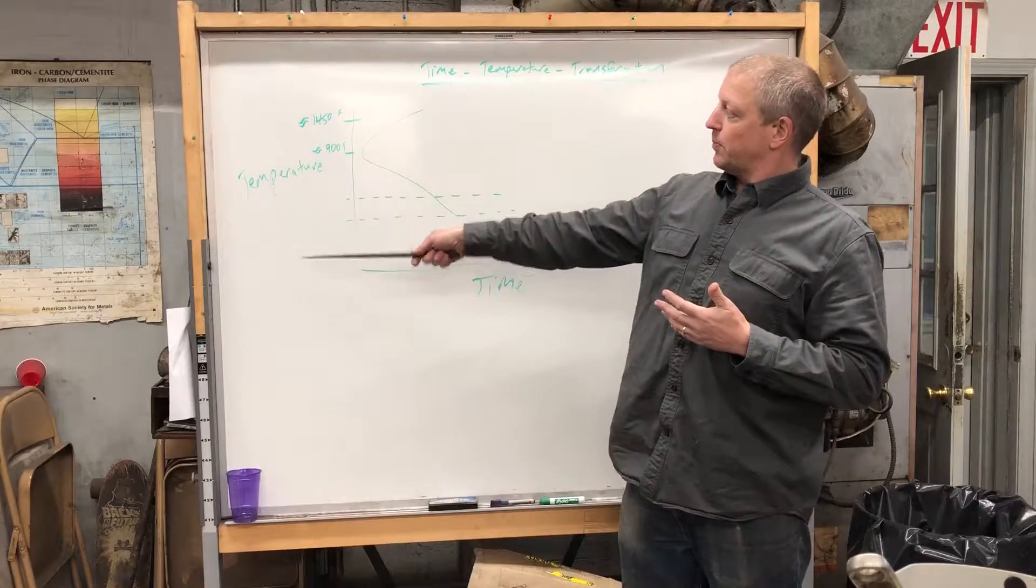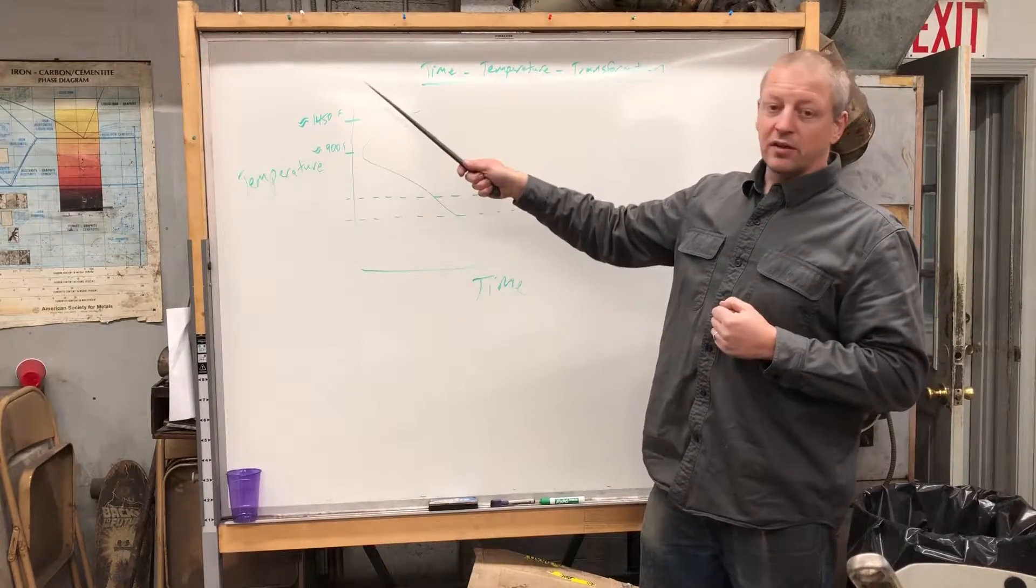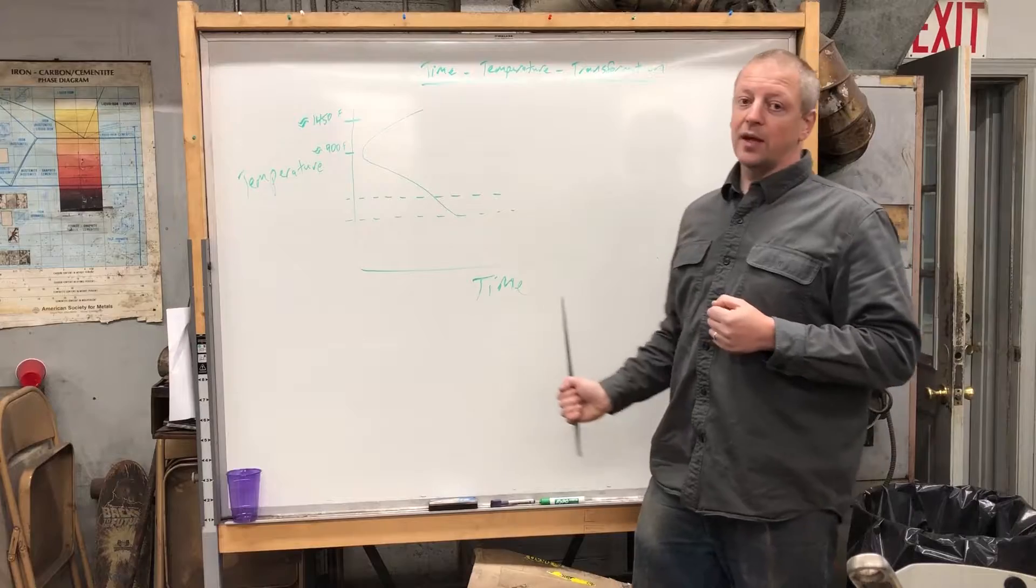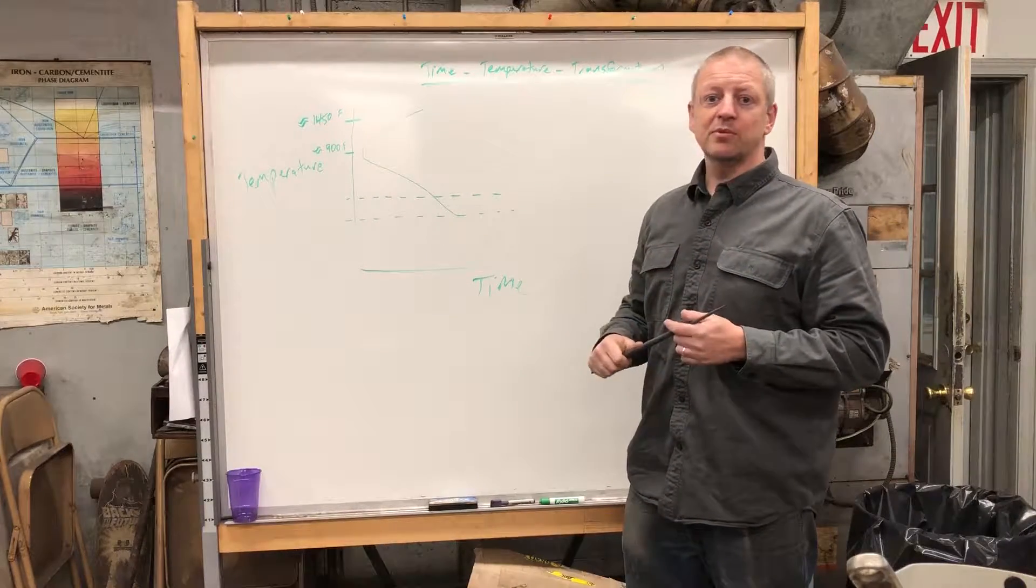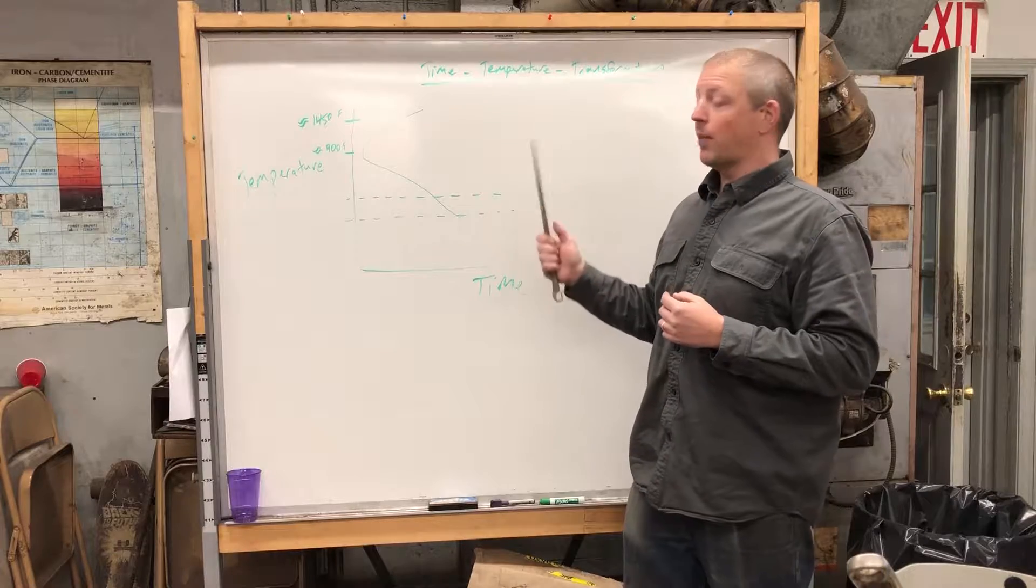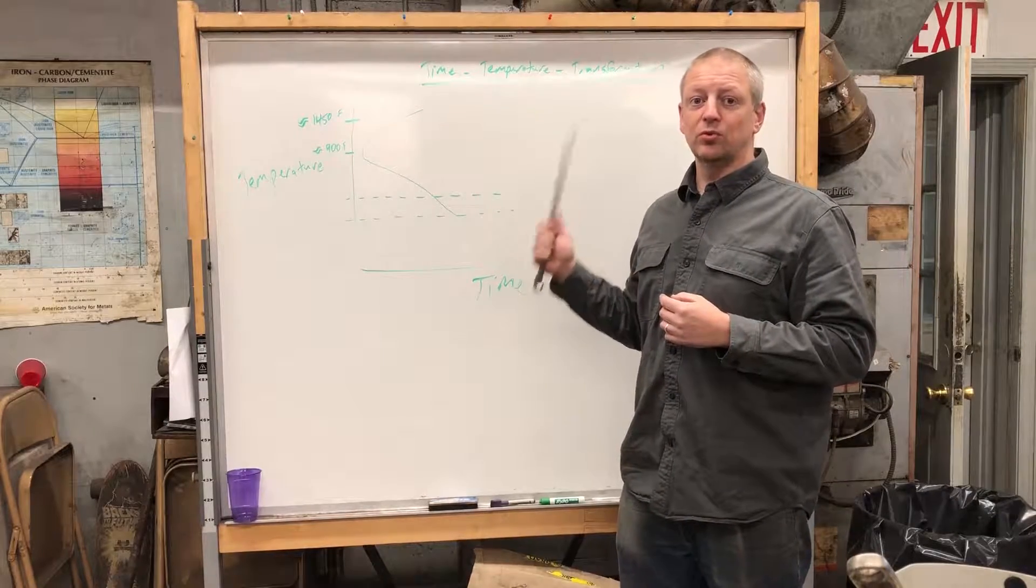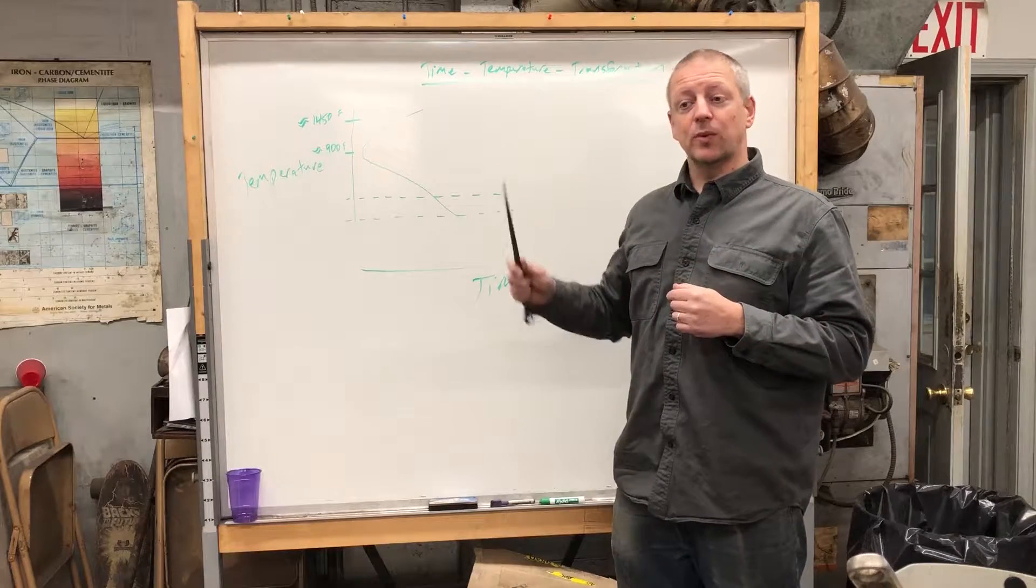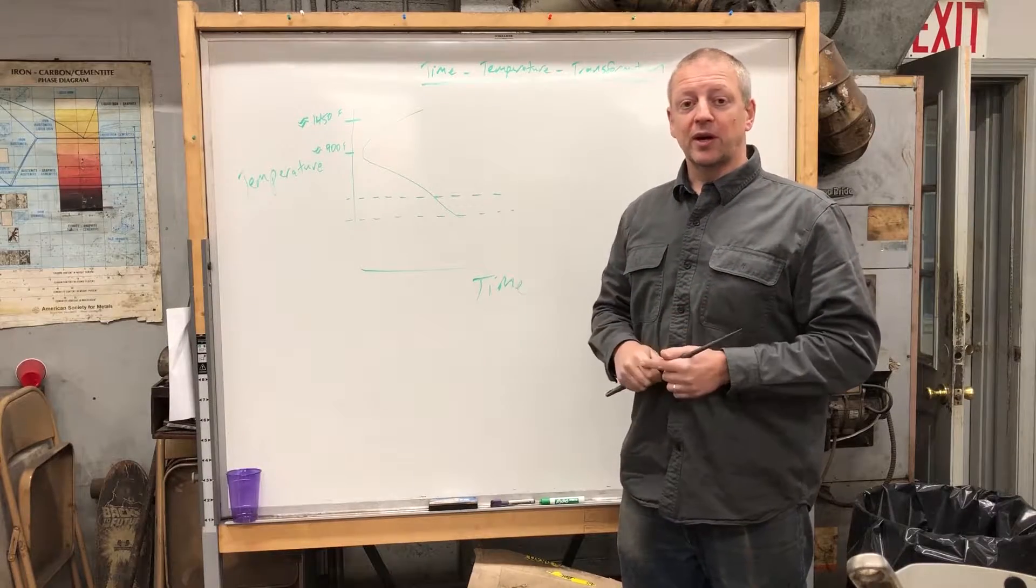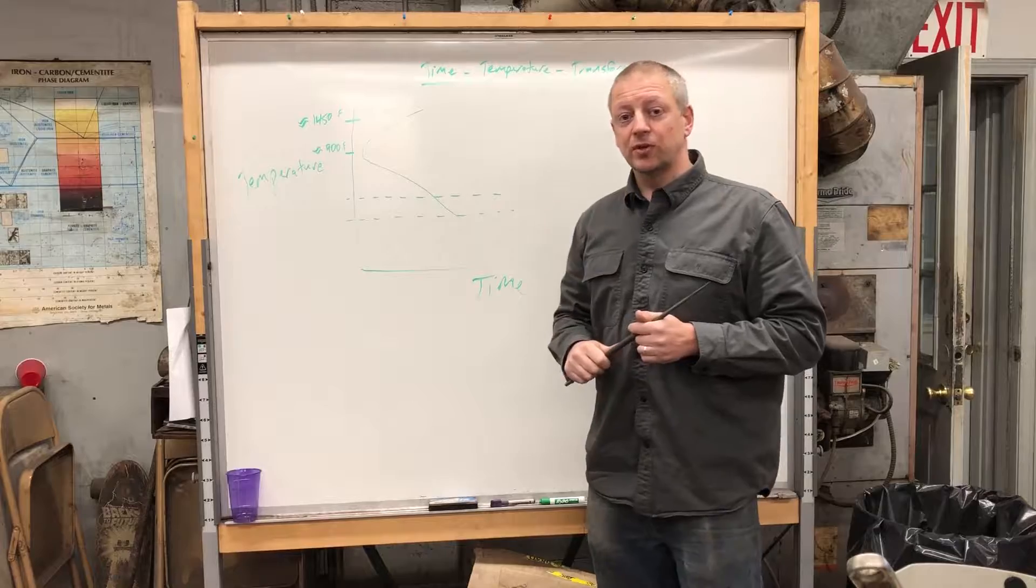To go over what the diagram is: we've got temperature on the vertical axis, time on the horizontal axis. You can look up TTT diagrams, there's quite a few out there. You can probably find one for the steel you use. Kevin Cashen has some on his website for some of the more common steels, so that's a good resource.